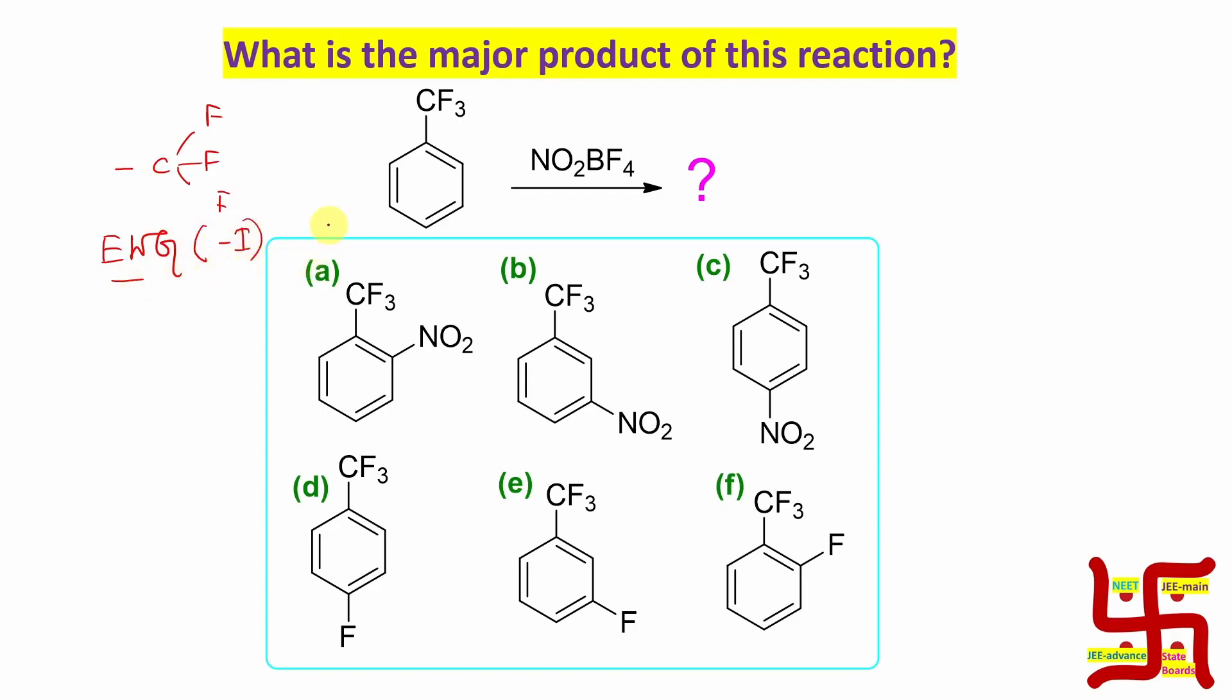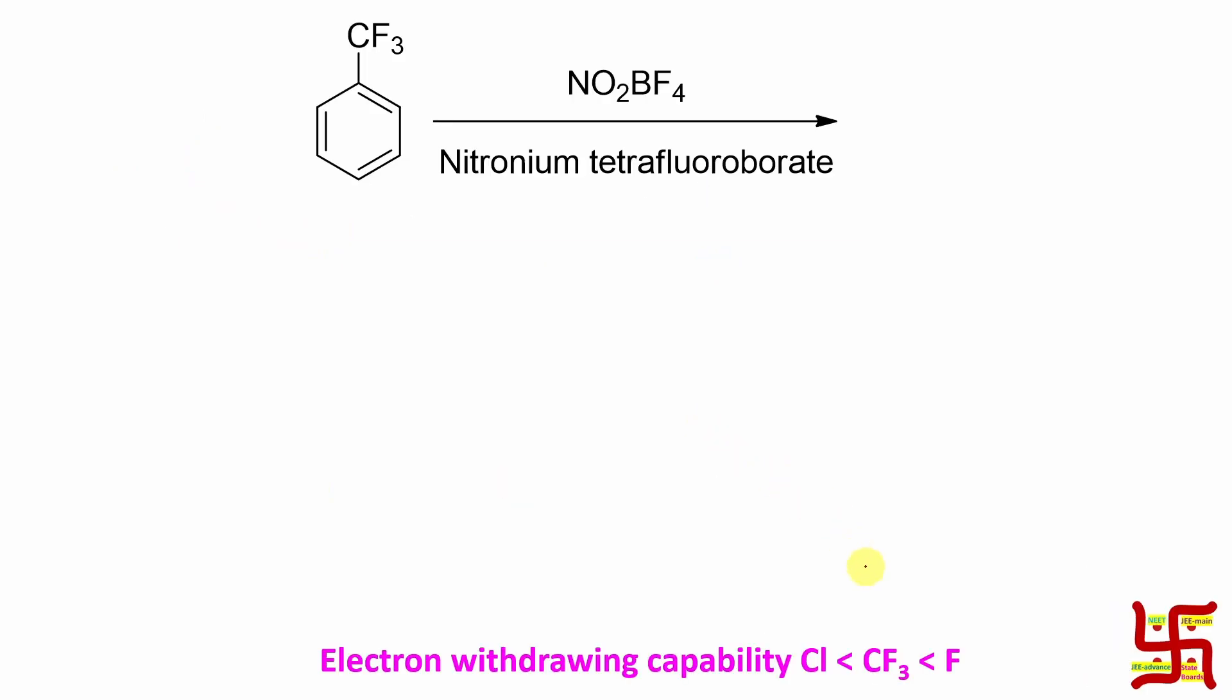Its minus i effect is actually in between fluorine and chlorine. Just imagine, fluorine is the most electronegative element, but this CF3's withdrawing capability is very high. That makes this benzene ring electron deficient compared to benzene itself. That's why it is actually meta-directing.